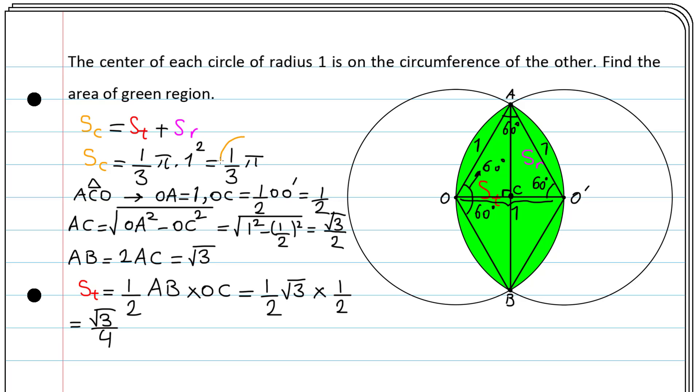So we found SC here and ST here, and we can plug them in to find SR. SR equals SC minus ST, which is one-third π minus square root of 3 divided by 4. The green area is twice as much as SR.